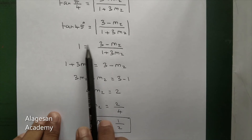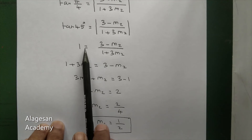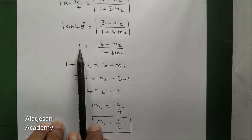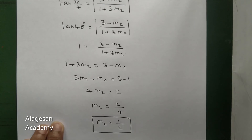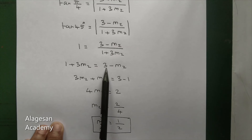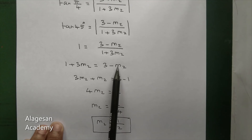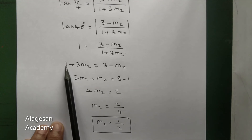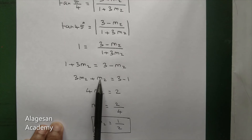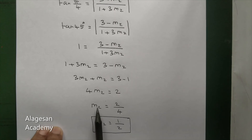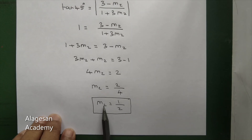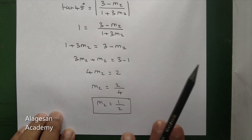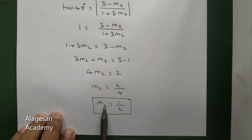Now take cross multiplication. So 1 plus 3·M2 equal to 3 minus M2. Bringing M2 terms to the left and constants to the right: 3·M2 plus M2 equal to 3 minus 1. So 4·M2 equal to 2. Therefore M2 equal to 2 by 4, which simplifies to 1 by 2. So M2 equal to 1 by 2. The slope of the other line is 1/2.